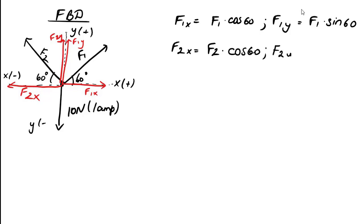After dividing into components, we can get rid of F1 and F2. This process also simplifies our free body diagram.